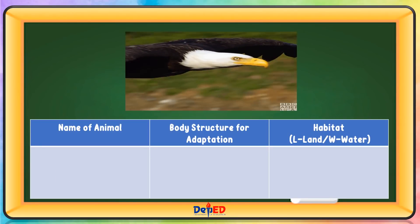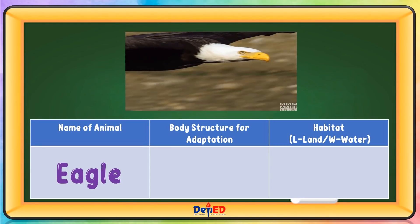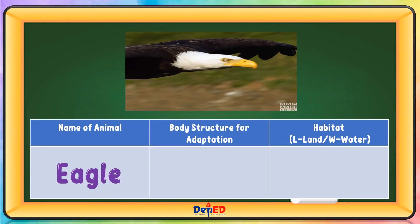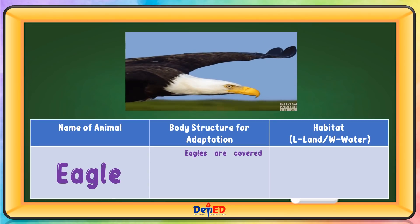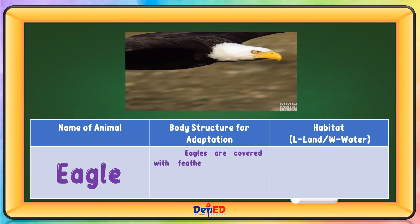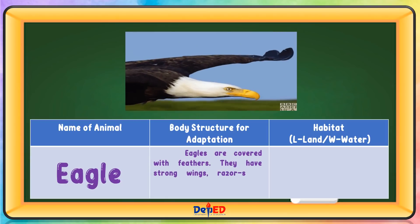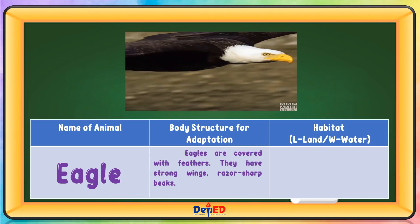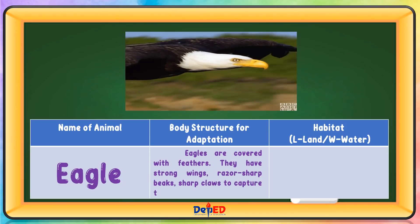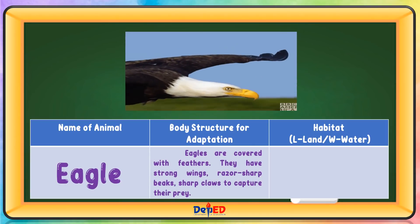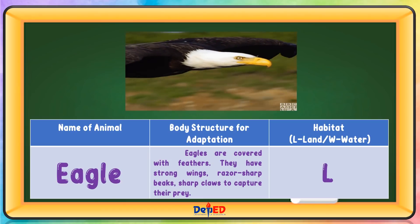Name of animal: Eagle. Body structure for adaptation: Eagles are covered with feathers. They have strong wings, sharp beaks, and sharp claws to capture their prey. Habitat: Land.